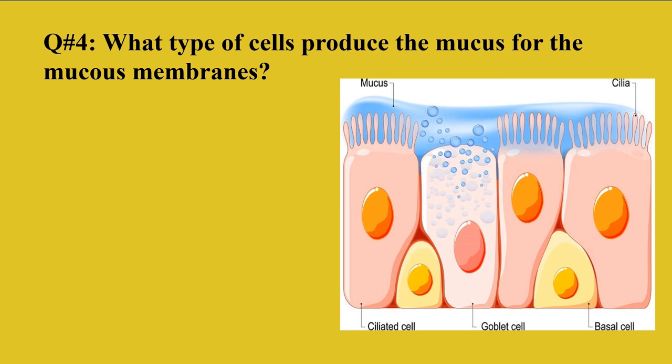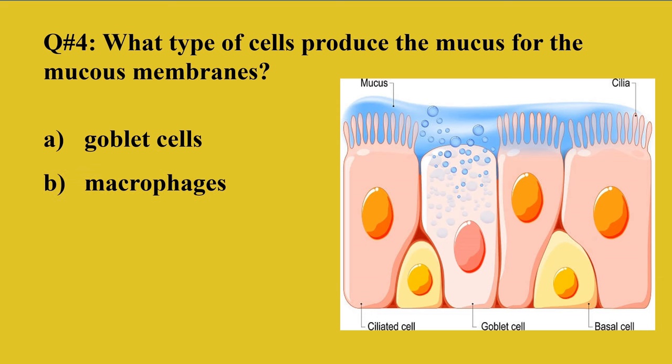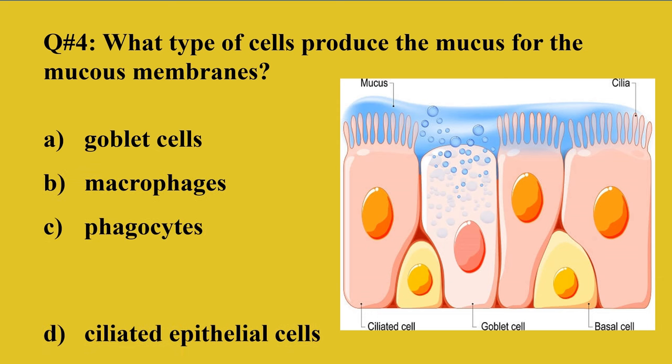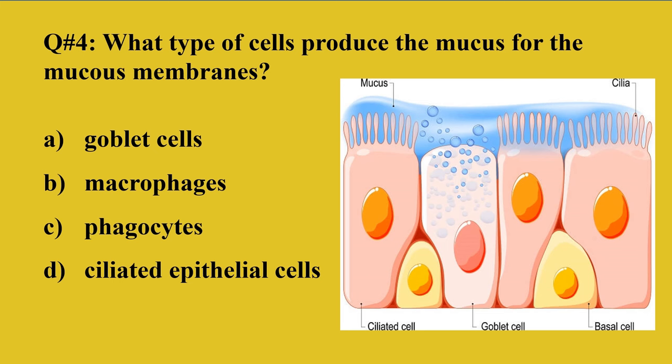Question 4: What type of cells produce mucus for the mucus membranes? The respiratory tract is surrounded by mucus cells, which protect from dust particles and germs by trapping and expelling them. A: Goblet cells, B: Macrophages, C: Phagocytes, D: Ciliated epithelial cells. The right option is A — goblet cells are involved in the production of mucus.